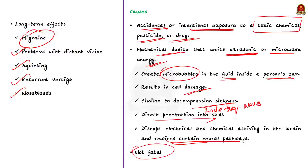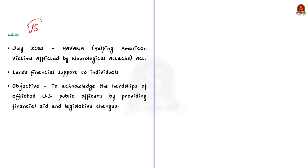Another explanation is that symptoms may be due to direct penetration of radio frequency waves into the skull. And this will disrupt electrical and chemical activity in the brain and rewire certain neural pathways. This rewiring may be the reason for the symptoms to be intense and long-lasting. But the silver line here is that Havana syndrome is not fatal. And all the infected individuals are still alive. Now, let us see the law enacted by the United States regarding Havana syndrome. In July 6, 2021, United States Senate unanimously passed the legislation. It was done to support American public servants who have incurred brain damage from possible direct energy attack or Havana syndrome. The act was called Havana Act, that is, Helping American Victims Afflicted by Neurological Attacks Act. The act plans to lend financial support to individuals who have suffered from Havana syndrome.